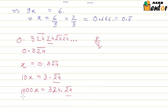So we chose 10 and 1000 as the multipliers. From these equations we can say that 1000x minus 10x is equal to 324.24 bar minus 3.24 bar.